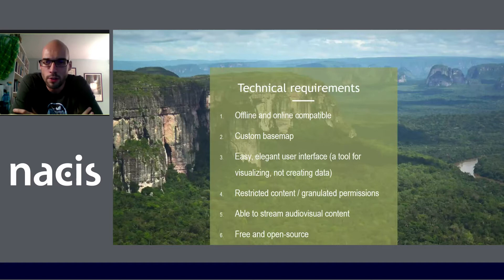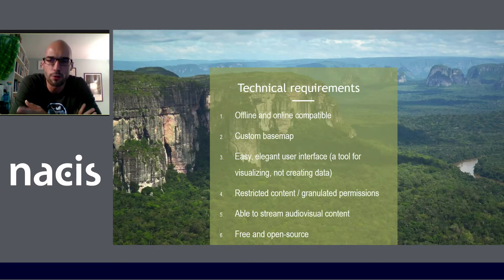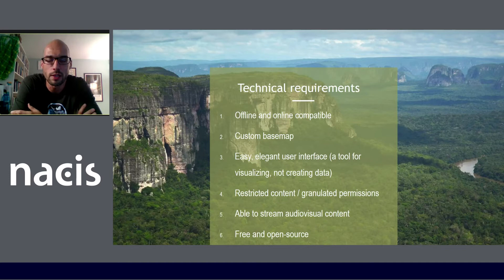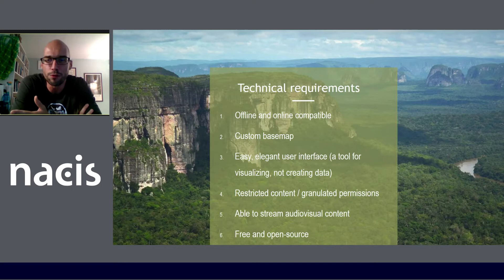We decided to develop an open source software dedicated to the specific need of mapping oral histories. We bore in mind several requirements: offline and online compatibility, the need for custom base maps — because most publicly available maps don't have the same information communities have, or there may be things they want on their maps but don't want to share on platforms like OpenStreetMap. We wanted an easy interface to explore lands and see videos about different places, the ability to control who views points and stories — so restricted stories about spiritual or historical places can be limited to community members — as well as the ability to stream audio and video content.